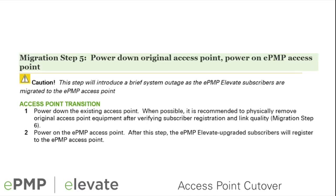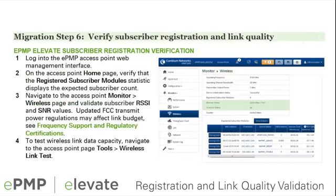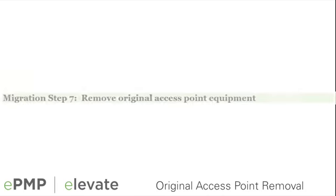Step five consists of the transition of subscriber registration from the original access point to the new ePMP access point. Once the ePMP Elevate subscribers have completed network entry, registration and link quality are validated in step six. After link validation, the original access point equipment may be removed.